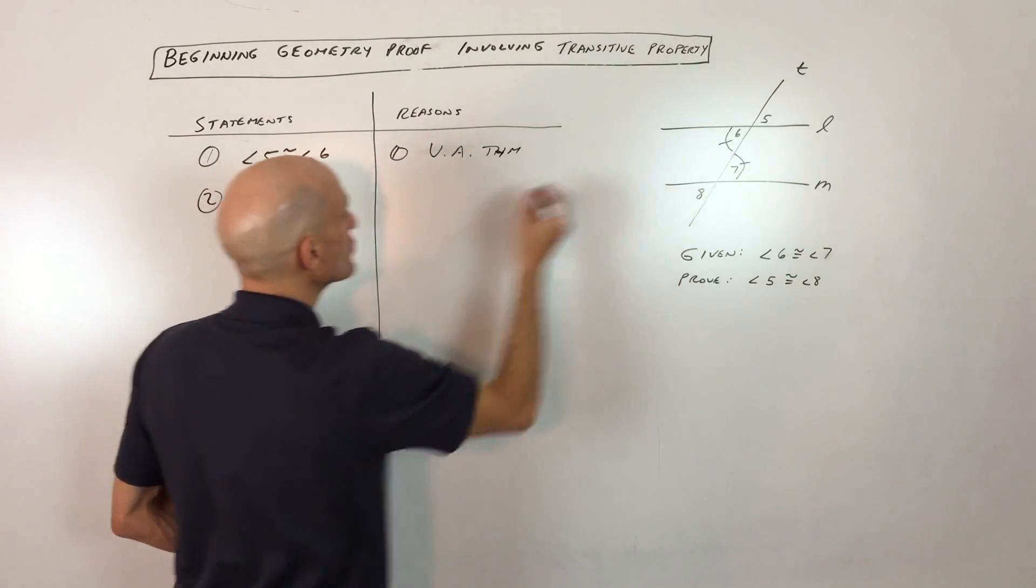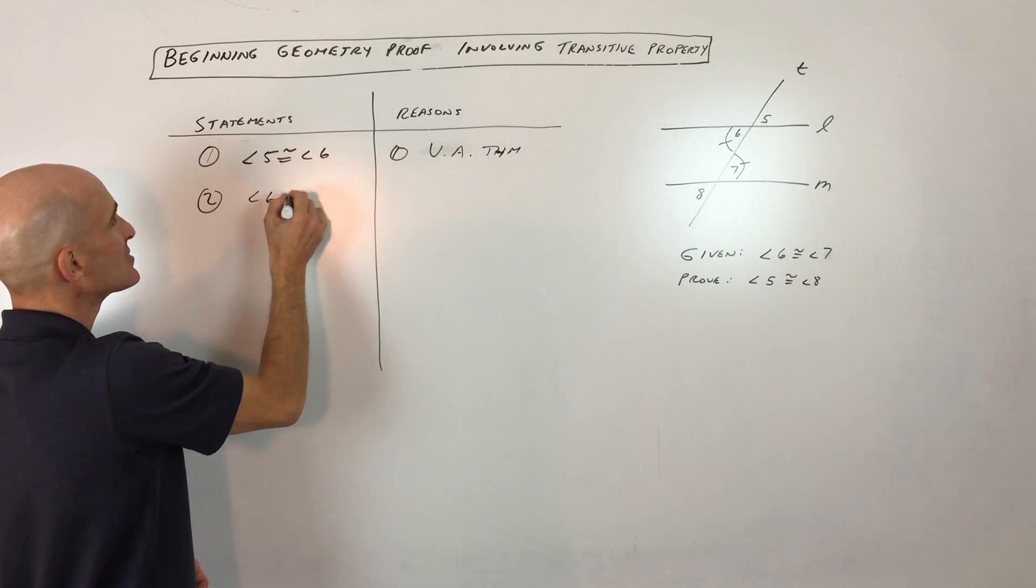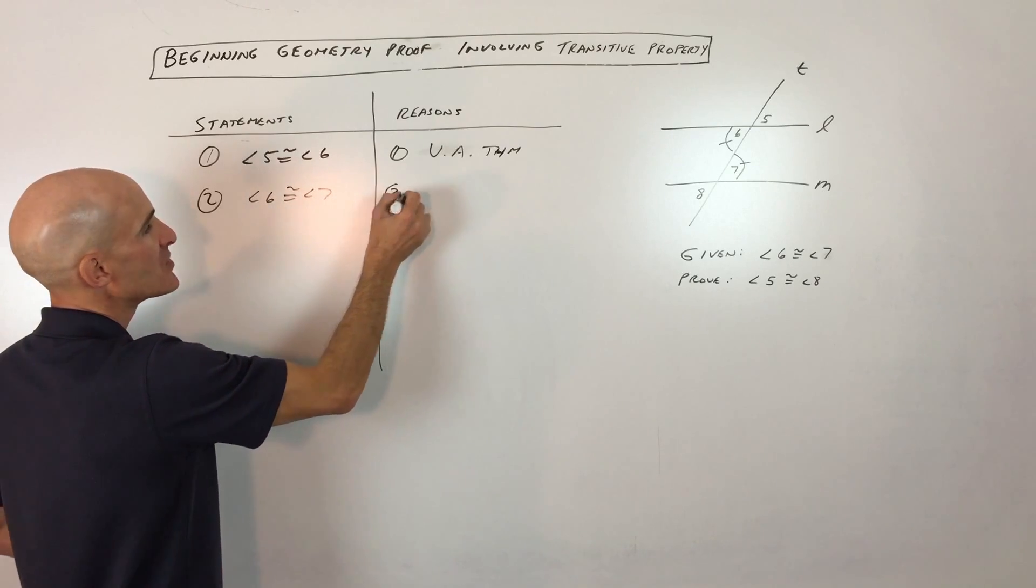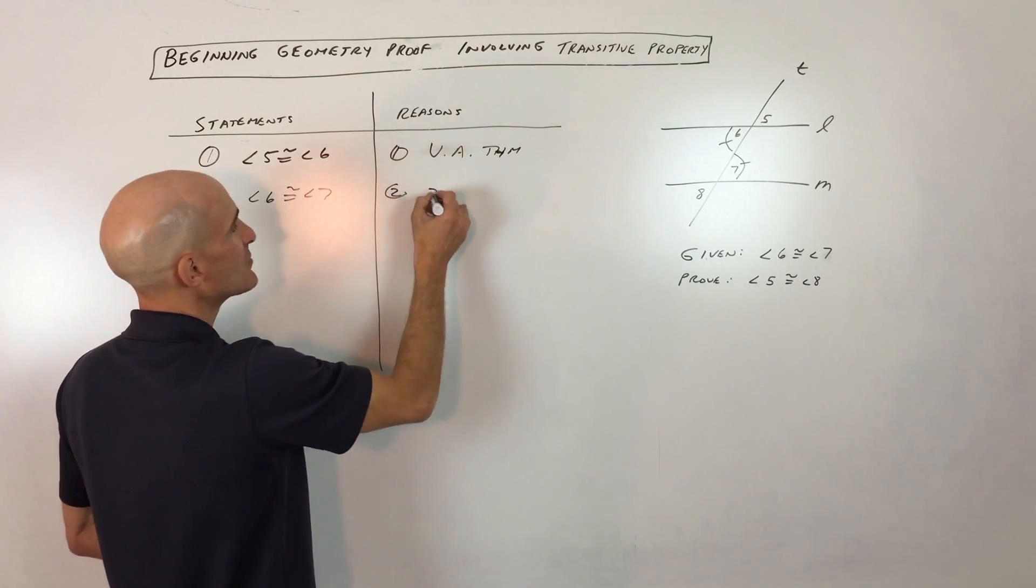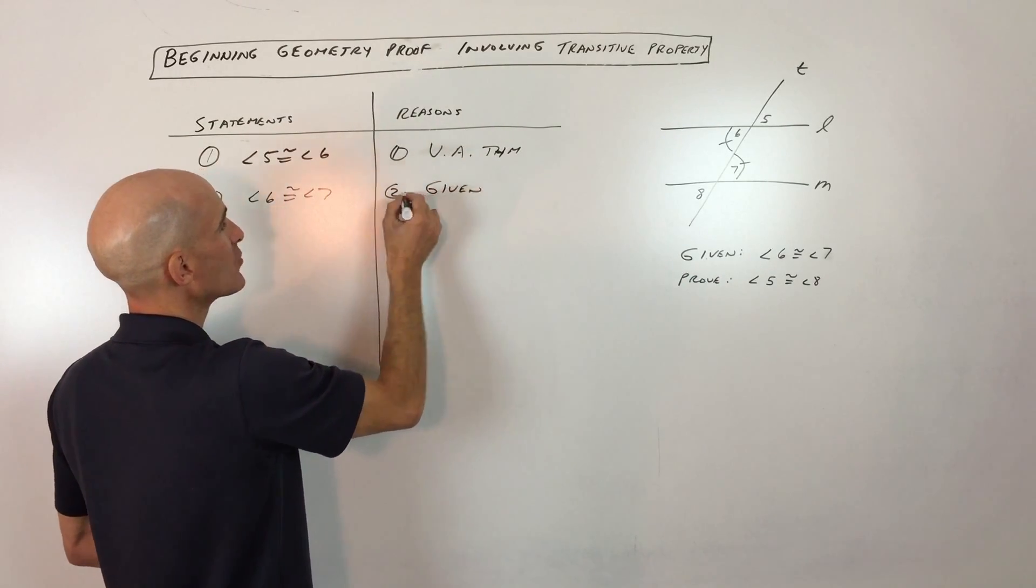We know that 6 is congruent to 7. So we're going to say angle 6 is congruent to angle 7. And the reason for that was that it was given. So I'm just going to write given. So you're with me so far?